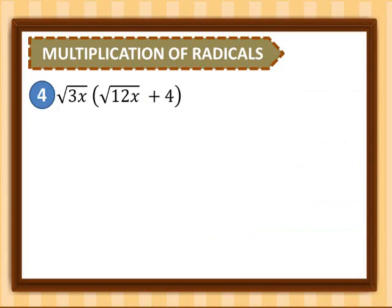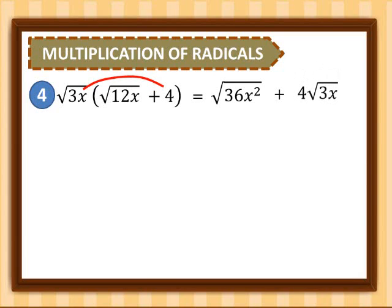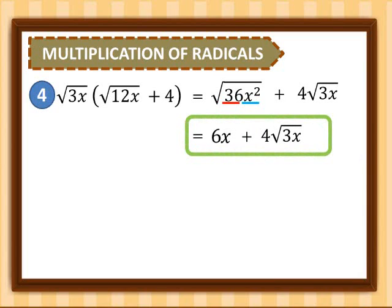Number 4: square root of 3x, multiplied by the quantity 12x plus 4. We distribute the square root of 3x. Square root of 3x times 12x gives us square root of 36x squared, and distributed to 4 gives us 4 times square root of 3x. Simplifying: square root of 36 is 6, and square root of x squared is x. So for number 4, we have 6x plus 4 square root of 3x.